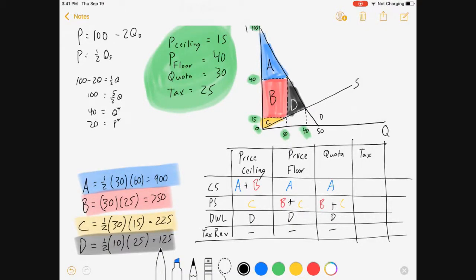And a tax. Let's see. We still have this person getting A. We still have supply getting C. We still have deadweight loss being D and a tax revenue of B.